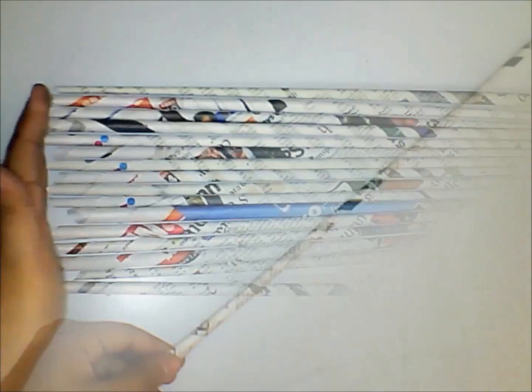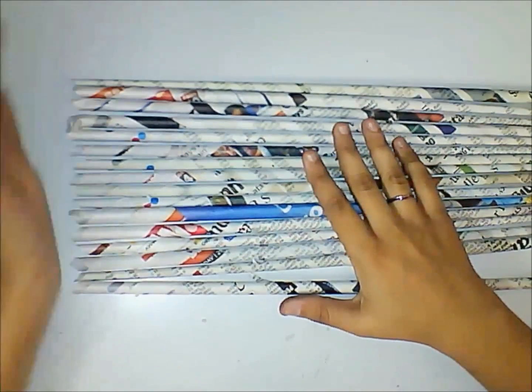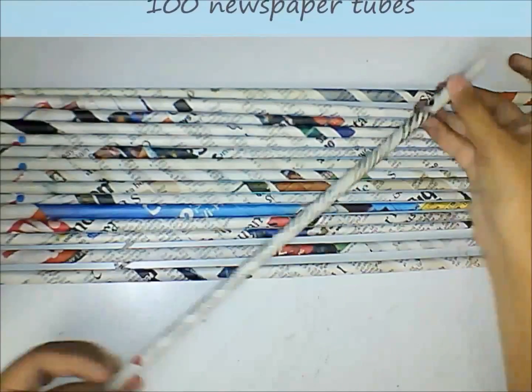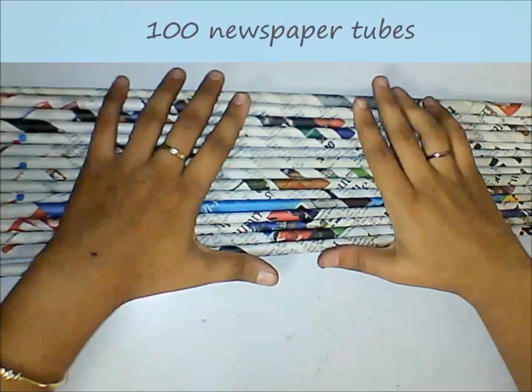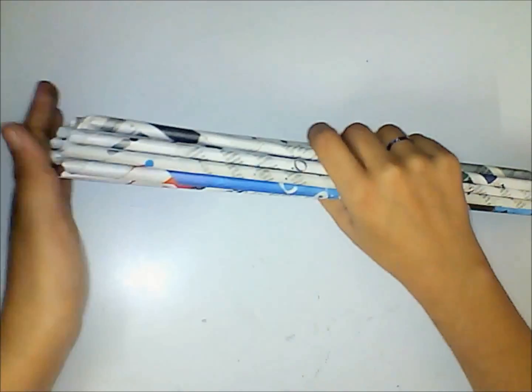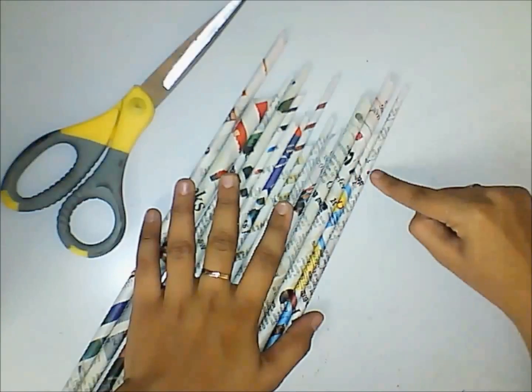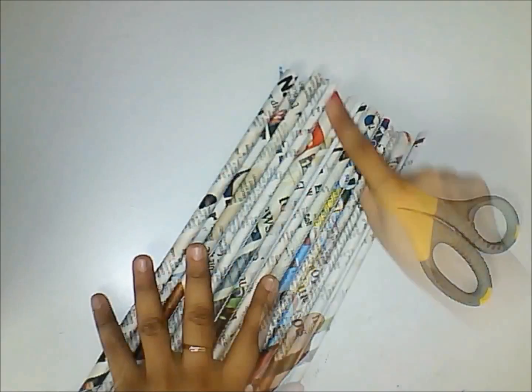Now arrange all the tubes according to size from one end, and you can remove the shorter newspaper tubes. You should make 100 newspaper tubes for this project. Let us make all these newspaper tubes of equal length. Go to the opposite side and using a pair of scissors, trim off the extra portions.